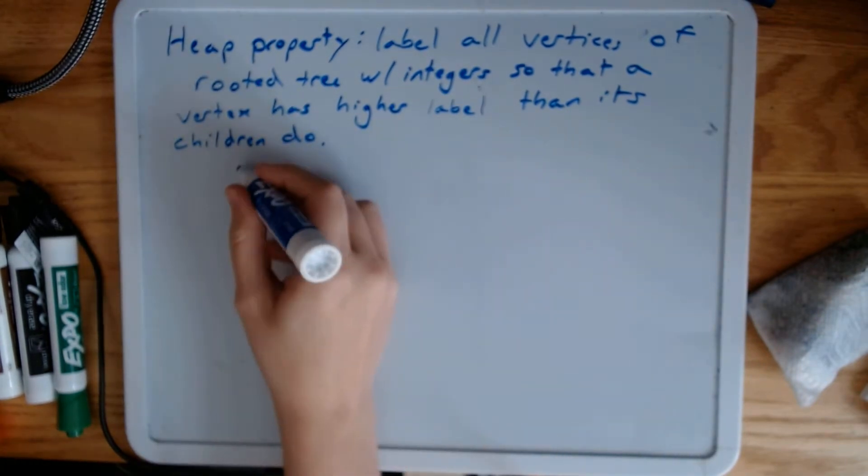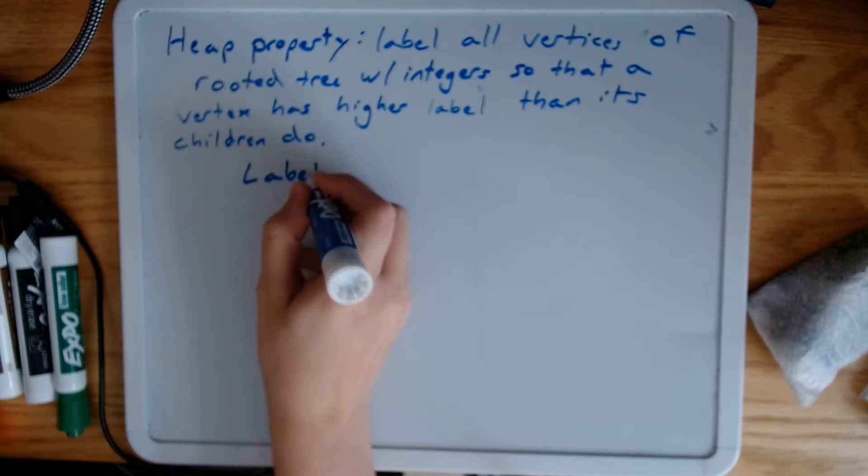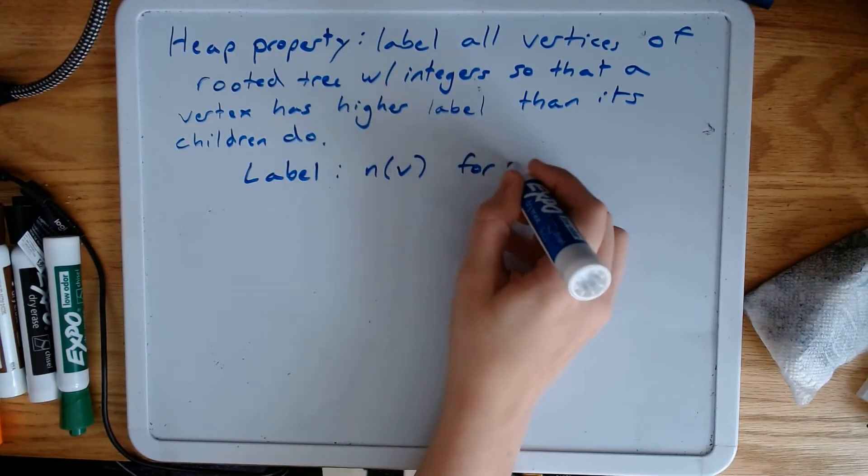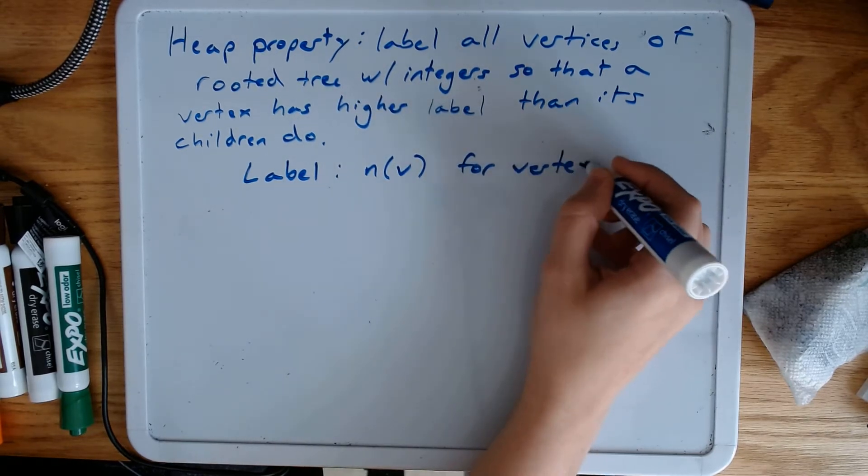So just to have some notation, let's say that our label is n of v for vertex v.